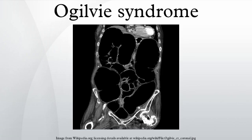Pathophysiology: The exact mechanism is not known. The probable explanation is an imbalance in the regulation of colonic motor activity by the autonomic nervous system. It has been postulated that reactivation of varicella zoster virus in the enteric ganglia may be a cause of Ogilvie's syndrome.